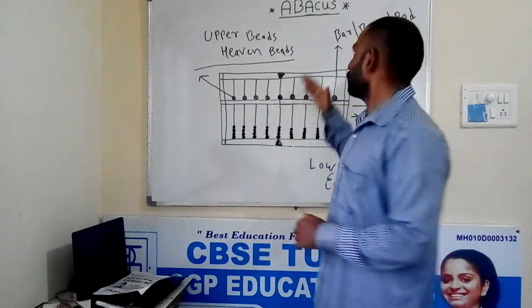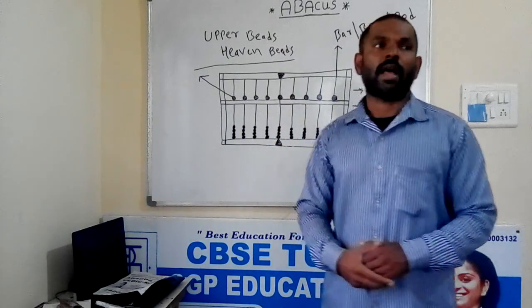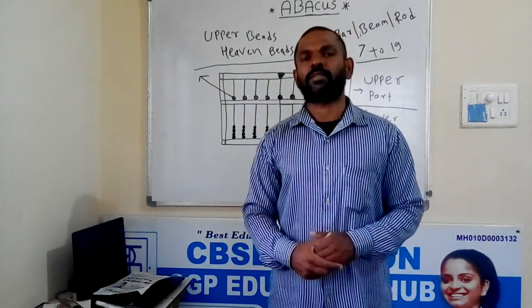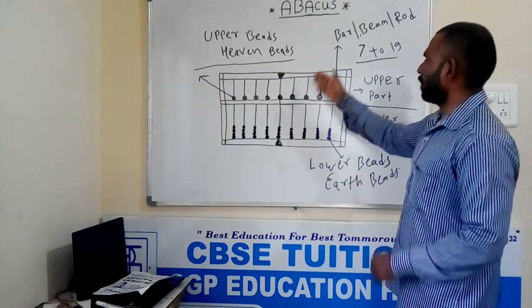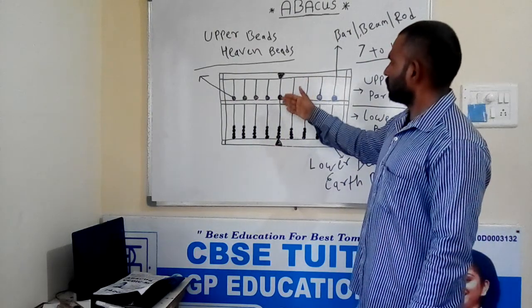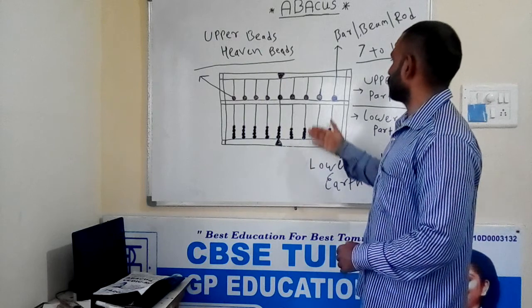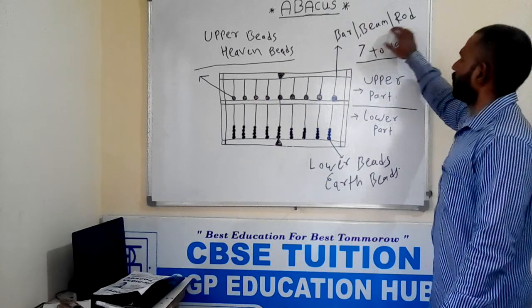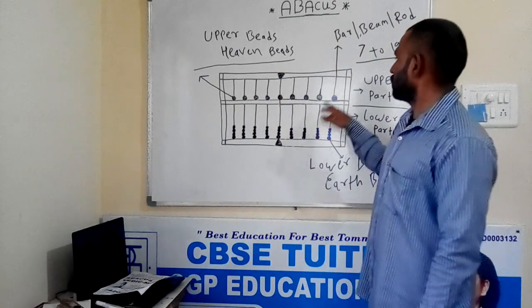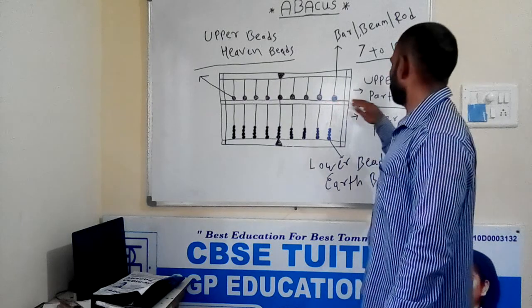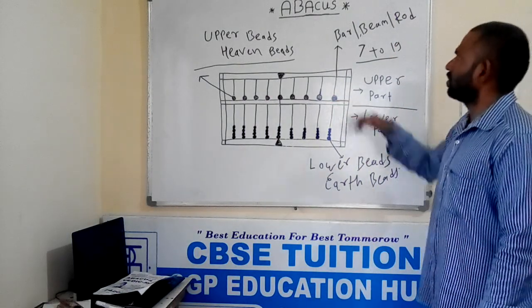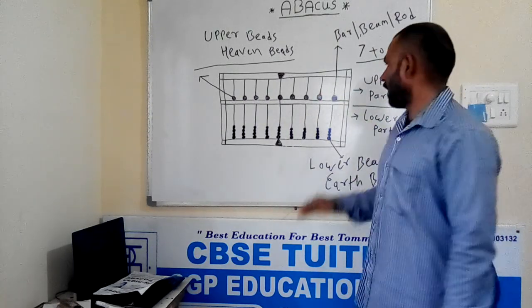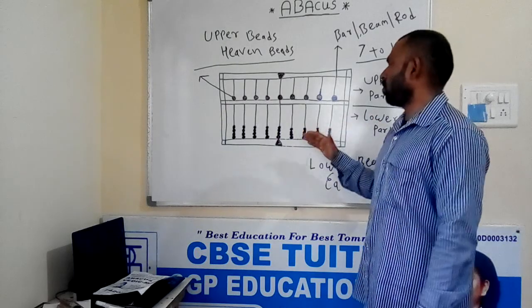Minimum, there is a 7-rod Abacus, and for teachers there is a master Abacus which has 17 to 19 rods. The rows you have seen are called bar, beam, or rod. These balls are called beads. The upper part includes 1 bead in each row and the lower part includes 4 beads in each row.